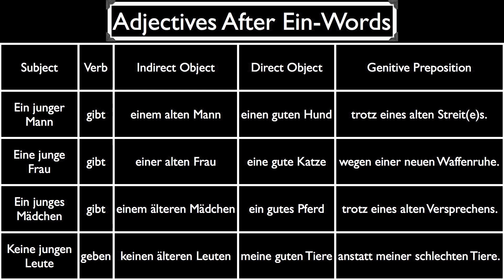Our third example uses only neuter nouns: Ein junges Mädchen gibt einem älteren Mädchen ein gutes Pferd trotz eines alten Versprechens — A young girl gives an older girl a good horse in spite of an old promise. In this sentence, we have an ES on the nominative and accusative forms and an EN on the dative and the genitive. Our last example uses only plural nouns: Keine jungen Leute geben keinen älteren Leuten meine guten Tiere anstatt meiner schlechten Tiere — No young people give no older people my good animals instead of my bad animals. As it was with der words, all of the plural endings after ein words take an EN.